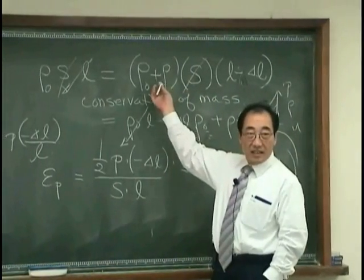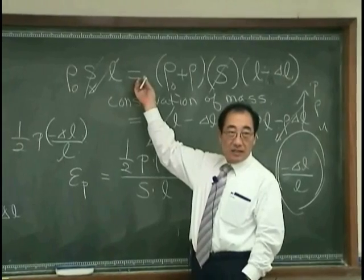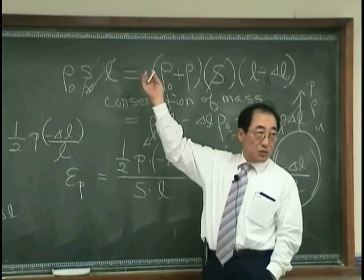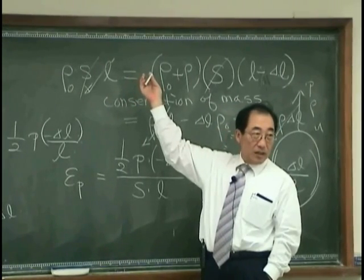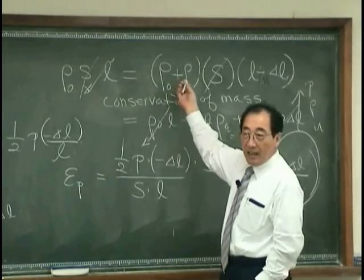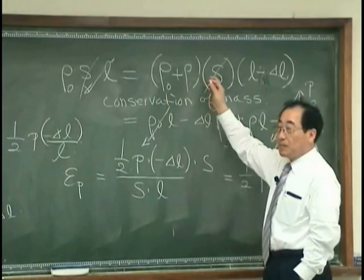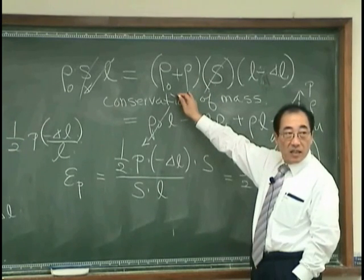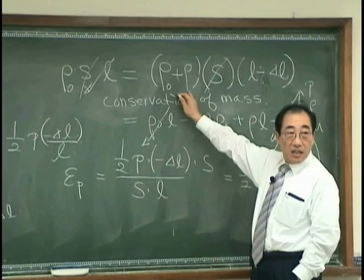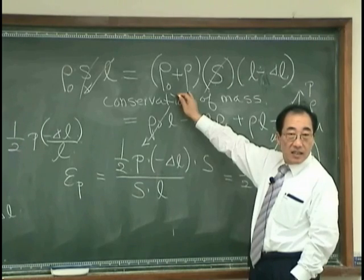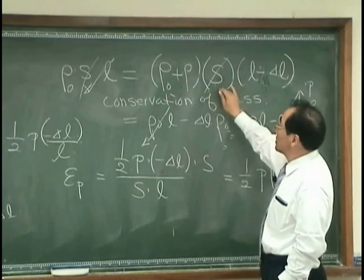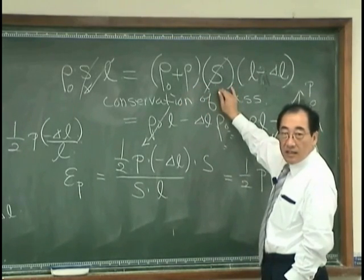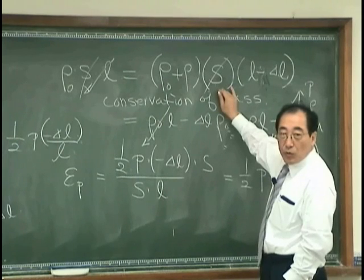Let's just see this. This is the original mass inside of the tube with length L, area S. And this is the density increase. And this is the sectional area, therefore no change.